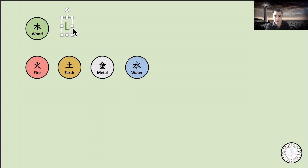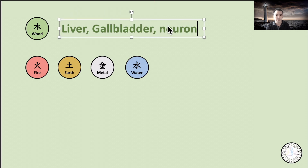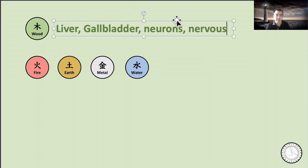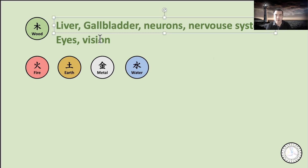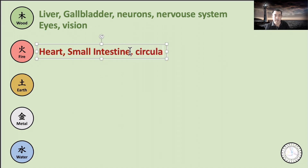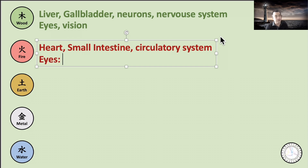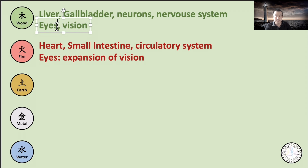The Wood element is considered as the liver and gallbladder as wood organs, and neurons are in this area. So the nervous system is Wood. Eyes and vision is part of Wood. Fire is heart and small intestine, so it plays a large part in the circulatory system. For eyes, Wood contributes to the expansion of eyes and expansion of vision — how to expand vision through the eyes. Eye as Wood is the eye itself, and it is related very closely with the liver system.